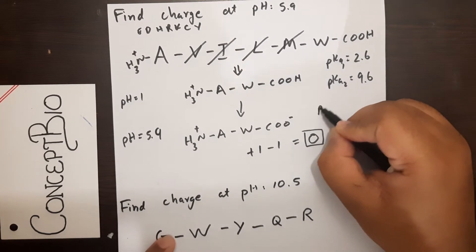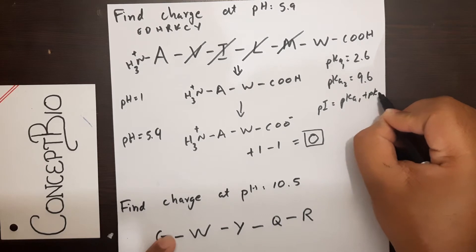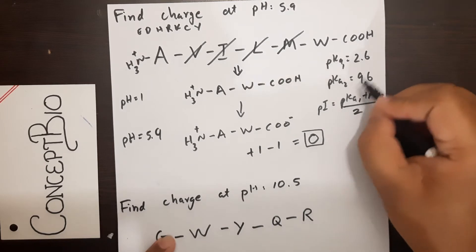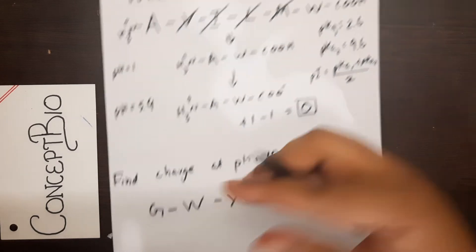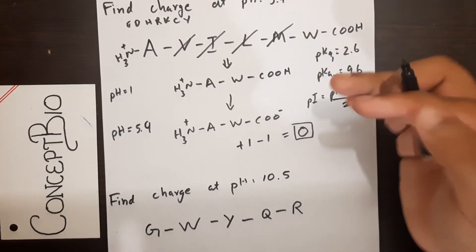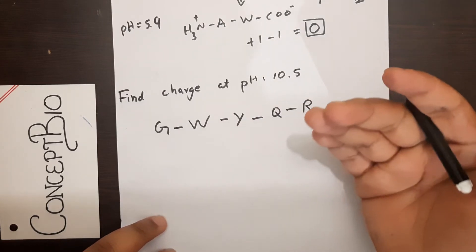If you want to know the pI of this, just use pI equals pKa1 plus pKa2 divided by 2. Do the calculation and you'll be able to get it. Usually they won't ask this question; this is just for your basic understanding.